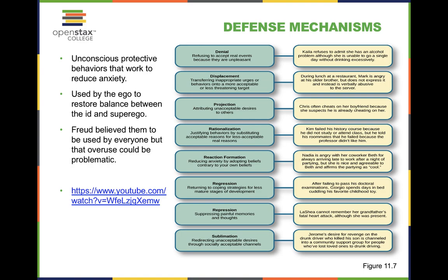Lastly, sublimation is whenever we redirect unacceptable desires through socially acceptable channels. This is the most healthy and productive defense mechanism. For example, Jerome's desire for revenge on the drunk driver who killed his son is channeled into a community support group for people who have lost loved ones to drunk driving. Similarly, if people have frustrations or unacceptable urges, they'll go and take it out at the gym — redirecting unacceptable urges into more productive and socially acceptable channels.